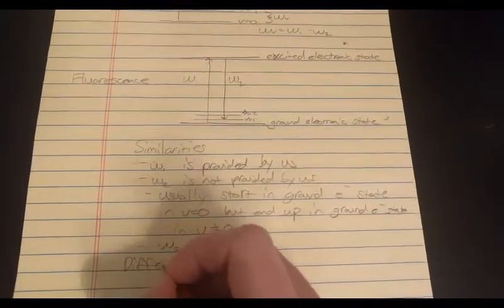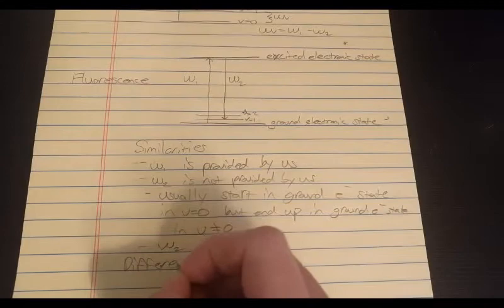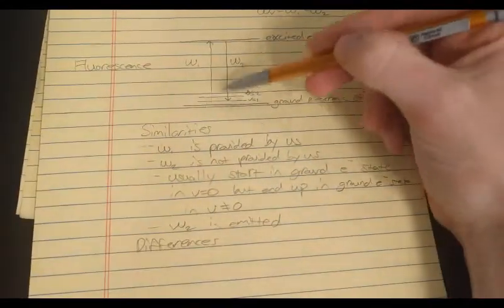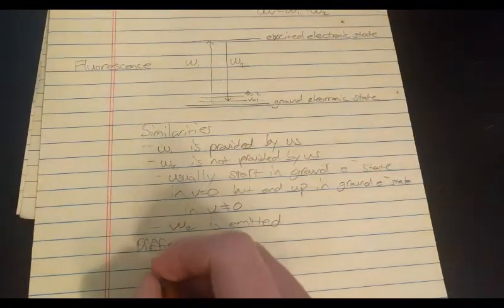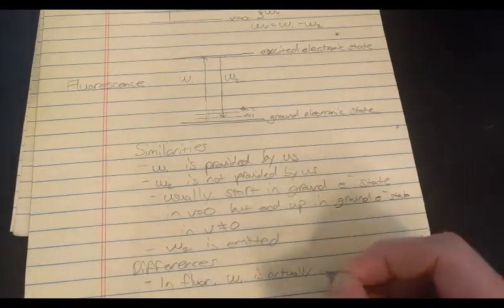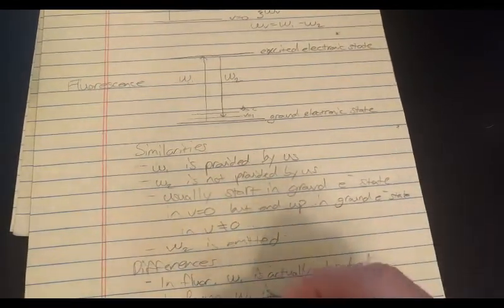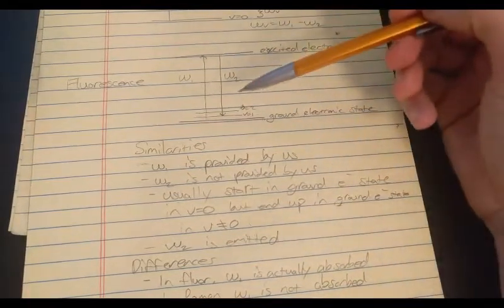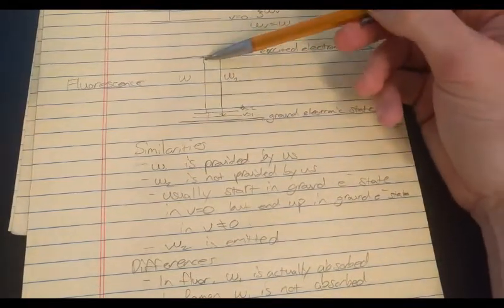Some differences are, in the fluorescence case, omega one is actually absorbed. But in the Raman case, omega one is not absorbed. Okay, so fluorescence omega one is absorbed.